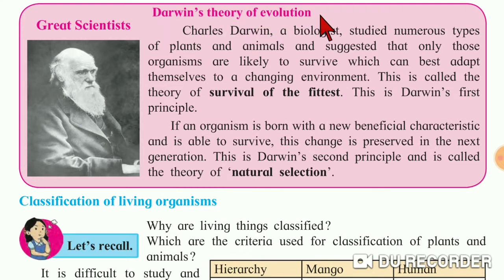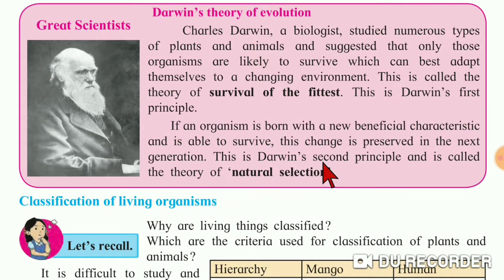Now in this part four of the first chapter, we are going to learn Darwin's theory of evolution. Charles Darwin was a great and well-known evolutionary biologist who studied numerous types of plants and animals and suggested two principles. We are going to see them in detail now.